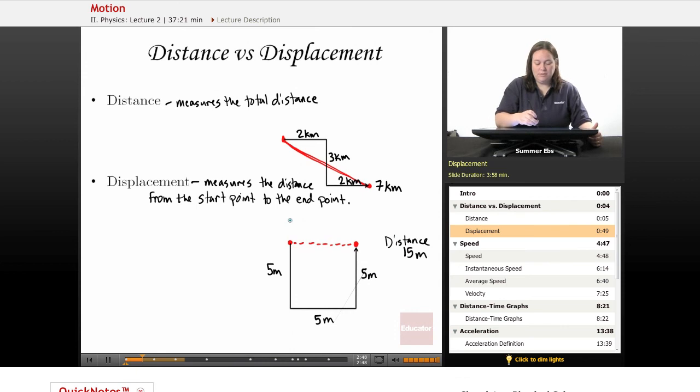However, the displacement from the start to the finish, the end point, you draw that straight line across, that displacement will be five meters. We're assuming this turtle walked in a perfect square, went five, five, five. So that last one across has to also be a five, five meters.